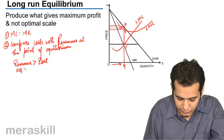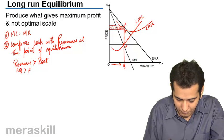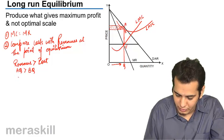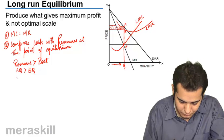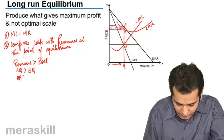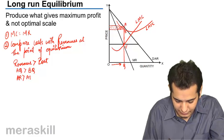That is, AQ is greater than BQ, which means at the point of equilibrium, AR is greater than ATC.